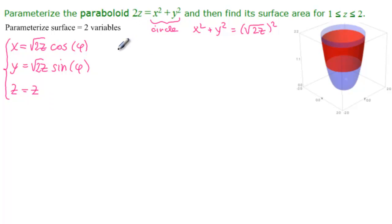So we're good, and we need to write down our intervals. So phi is, as always with a circle, 0 to 2 pi. And z, we have right over there, is from 1 to 2. So this completes the parameterization of the paraboloid.